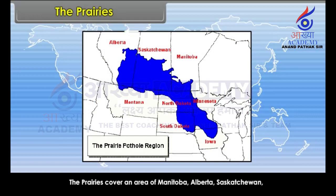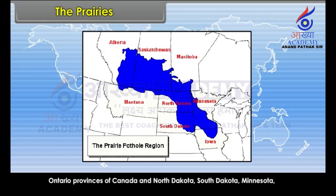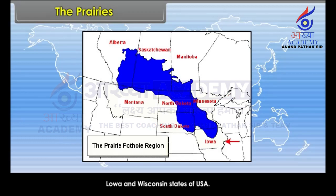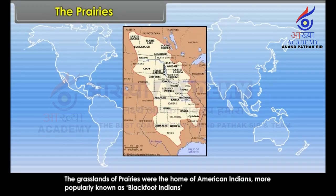The Prairies cover an area of Manitoba, Alberta, Saskatchewan, and Ontario Provinces of Canada, and North Dakota, South Dakota, Minnesota, Iowa, and Wisconsin states of USA. The grasslands of Prairies were the home of American Indians, more popularly known as Blackfoot Indians.